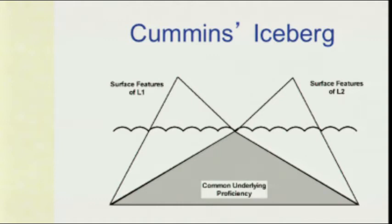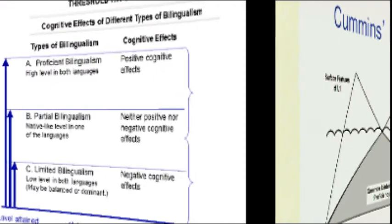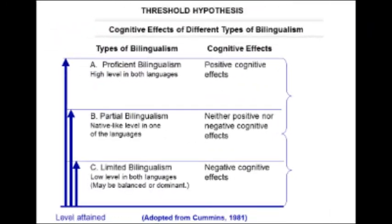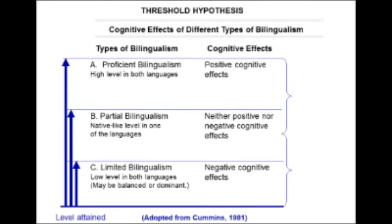Jim Cummins' dual iceberg, common underlying proficiency, and threshold hypotheses — this is one of the toughest things to remember. See the three pillars shooting up into the sky? That's how you remember this.